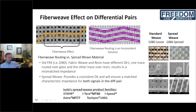Here are some Isola spread-weave product families. Most of these come in a spread-weave option. If you're doing anything over 2.4 GHz data transfer rates, you should be asking whether the material is available in a spread-weave form.